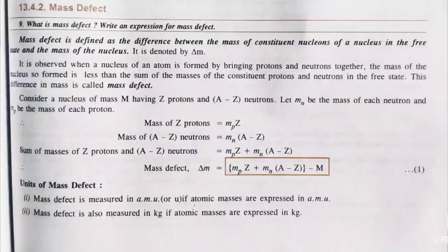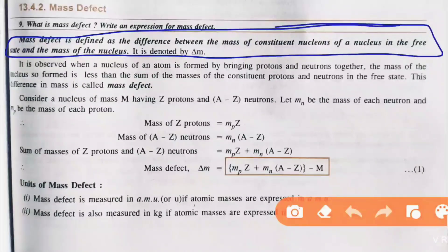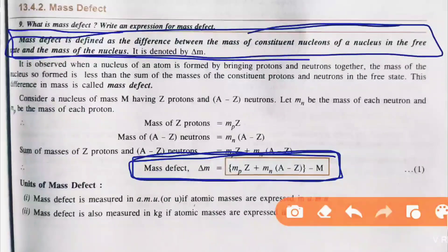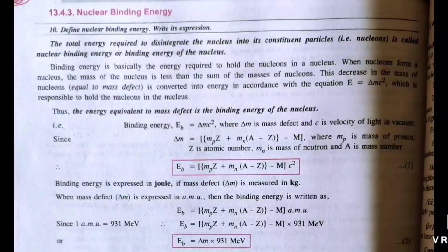Looking at the definition, just learn the last result. Only the definition needs to be learned and the final result. If mass defect is asked in an exam, you know it. Next is nuclear binding energy — the total energy required to disintegrate the nucleus into its constituent particles, meaning breaking the nucleus into its nucleons.